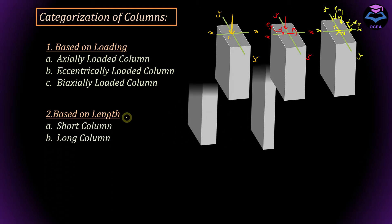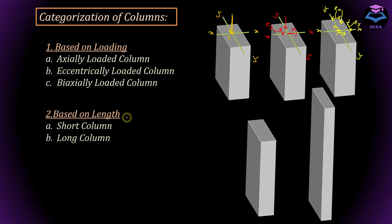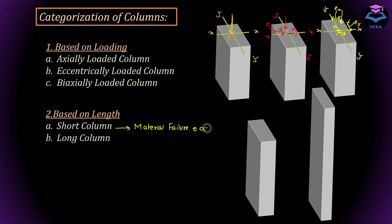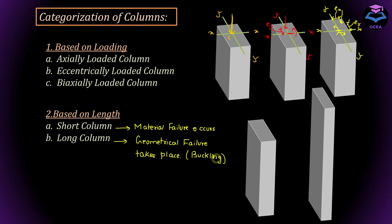Based on length, columns can be classified as short columns and long columns. The column in which material failure occurs is known as a short column. For instance, in a reinforced concrete column either the concrete crushes or the steel yields — that is a material failure, and it comes under the category of short reinforced concrete column. On the other hand, columns in which geometrical failure takes place due to buckling are known as long columns.